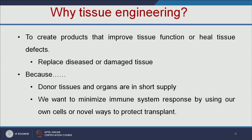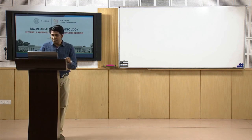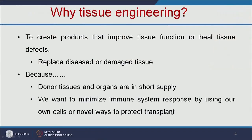Why we need tissue engineering? To replace the diseased or damaged tissue, because the donor tissues and organs are short in supply. We do not have sufficient donors for replacing the damaged tissues or organs, and also if you take the organs from a different person or different animal, our immune system will reject it. So to minimize the immune system response, we can use our own cells and we can engineer the manmade tissues.